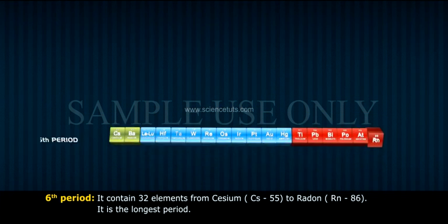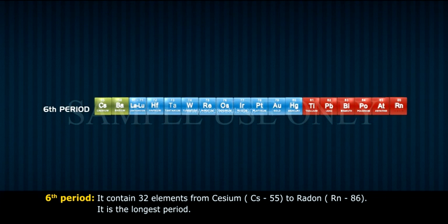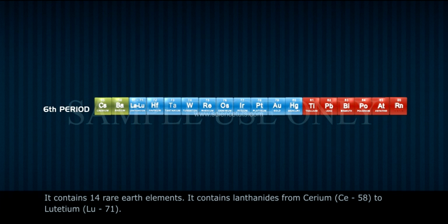The sixth period contains 32 elements from cesium, Cs-55, to radon, Rn-86. It is the longest period. It contains 14 rare earth elements, including lanthanides from cerium, Ce-58, to lutetium, Lu-71.